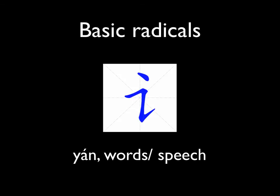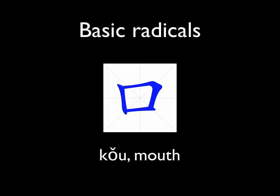This one is 言, which means words and speech. Later you will learn characters related to, for example, language, speech, speak, and words — all have this radical. 口 means mouth, so a lot of characters related to eating, speaking, and singing all have this radical.